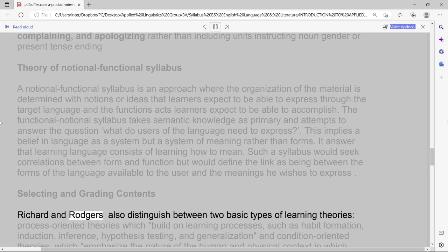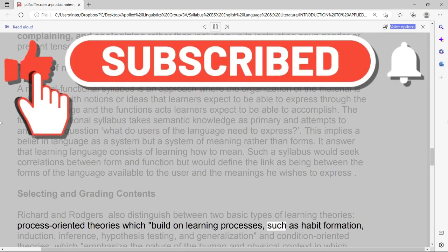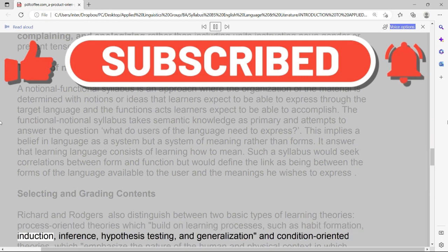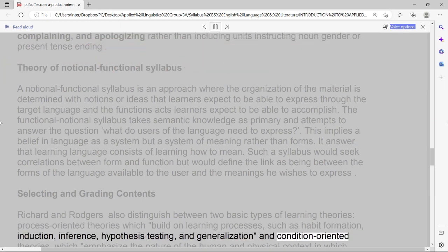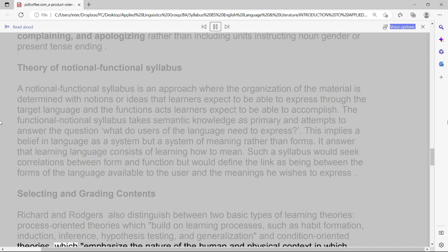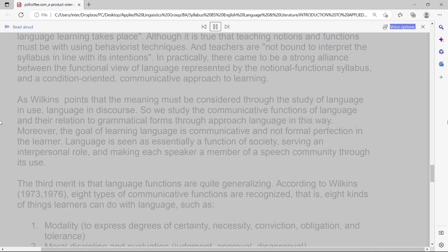Selecting and grading contents. Richard and Rodgers also distinguish between two basic types of learning theories: process-oriented theories which build on learning processes such as habit formation, induction, inference, hypothesis testing, and generalization, and condition-oriented theories which emphasize the nature of the human and physical context in which language learning takes place.